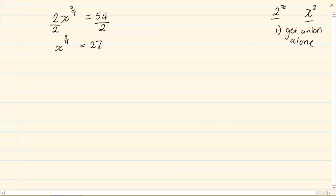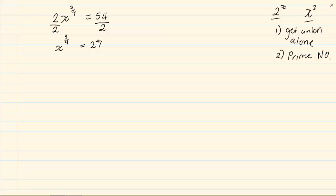Now, exponents is based on prime numbers. Once you have gotten the unknown alone, then only do you go and break down to prime numbers wherever you can. Sometimes you will see you can break down prime numbers on your left-hand side, sometimes on your right-hand side, sometimes only on one side. But wherever you can break down into prime numbers, you immediately do that.